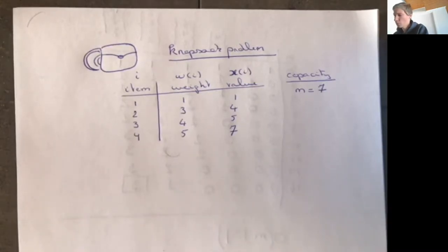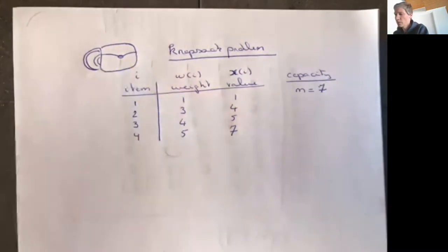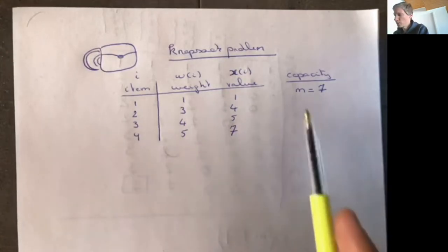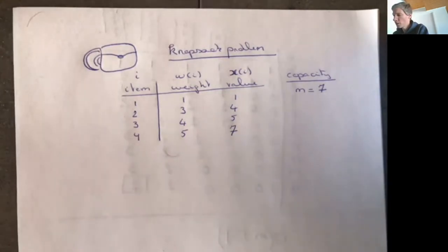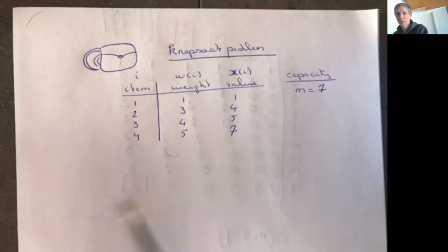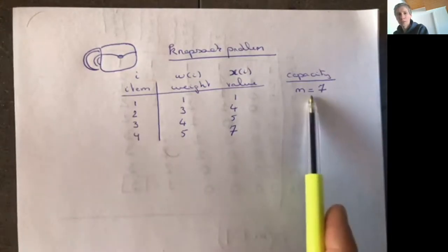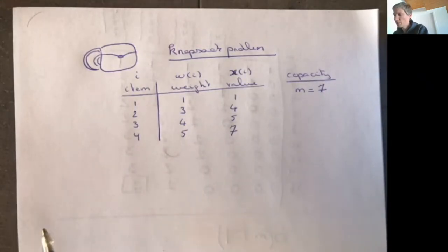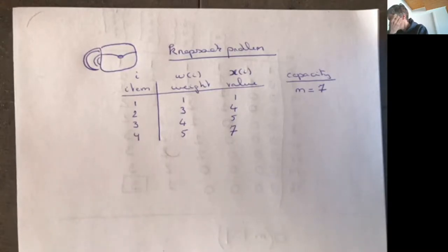How does the problem look like? You have a knapsack and you want to put some items in it, but the knapsack can only hold so many kilos. Every item has a certain weight and a value, and you want to put items in the knapsack such that you don't surpass the capacity, but at the same time you would like to maximize the value of the items in the knapsack.